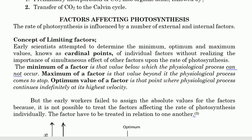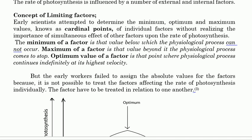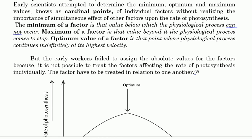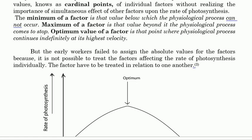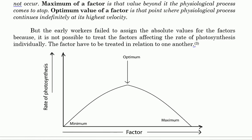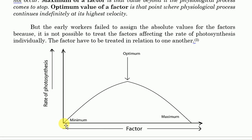However, this early work failed to assign absolute values for the factors, because it is not possible to treat the factors affecting the rate of photosynthesis individually — the factors have to be treated in relation to each other. Scientists were unable to treat each factor separately, because you need to consider factors in relation to other factors. On the graph, the minimum is the point below which no process can occur, the optimum is where rate is highest, and the maximum is the upper boundary.